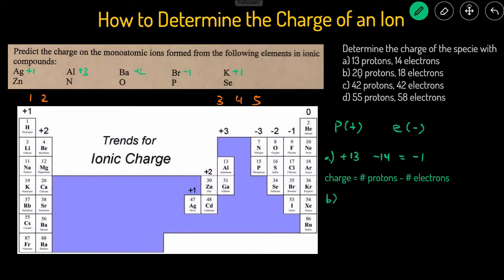B, we have 20 protons and 18 electrons. Since we have more protons this time, we expect it to be positively charged. And to determine the charge, that's just going to equal the number of protons, 20, minus the number of electrons, 18. So then that would be a positive 2 charge.